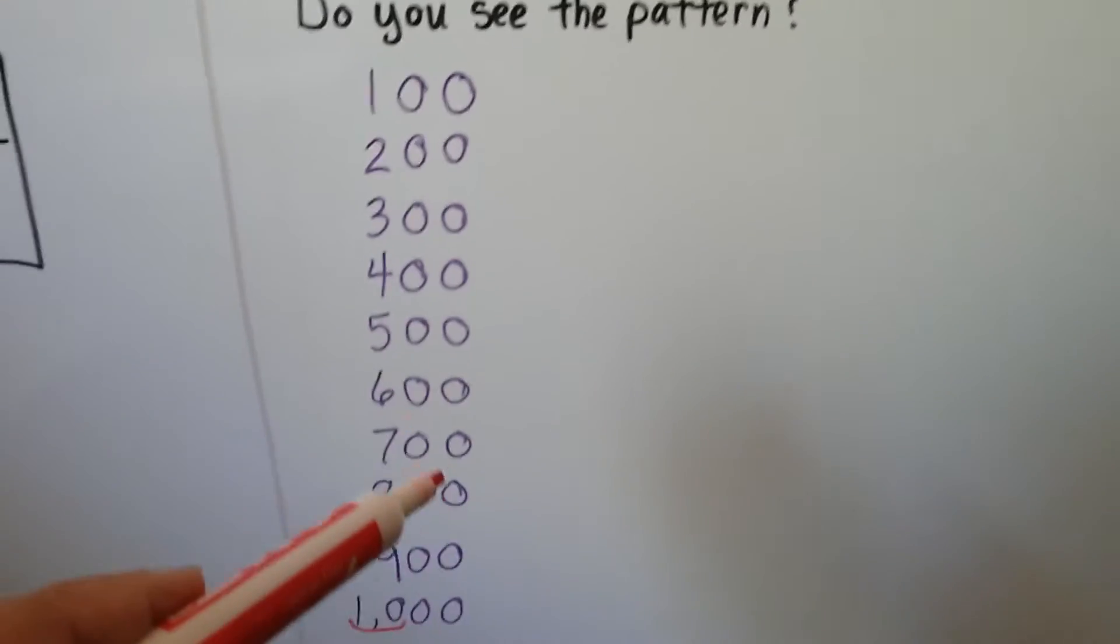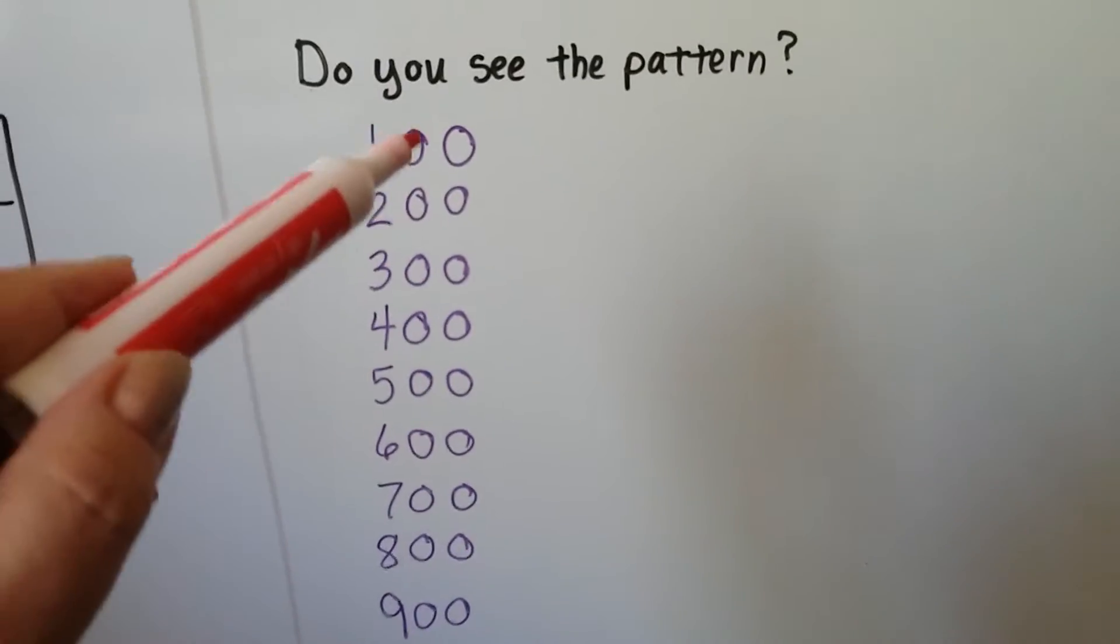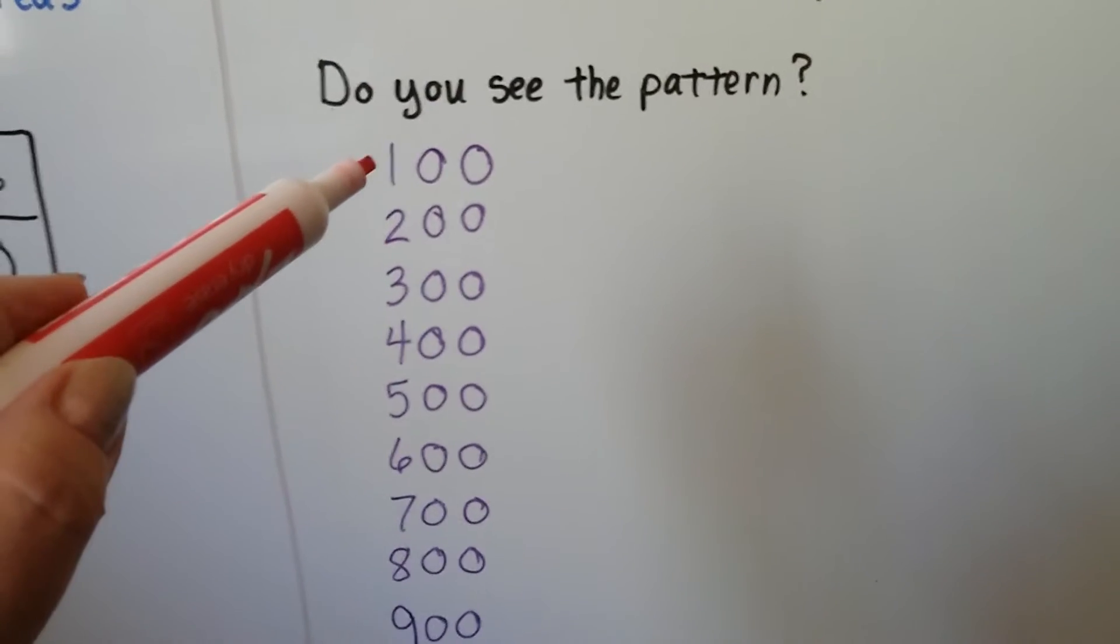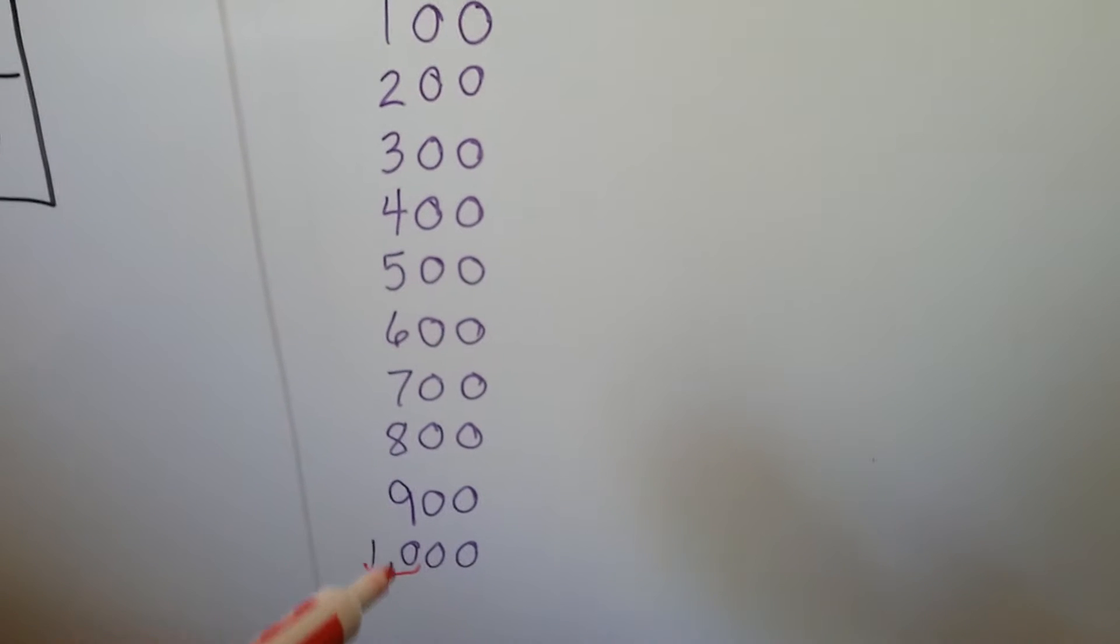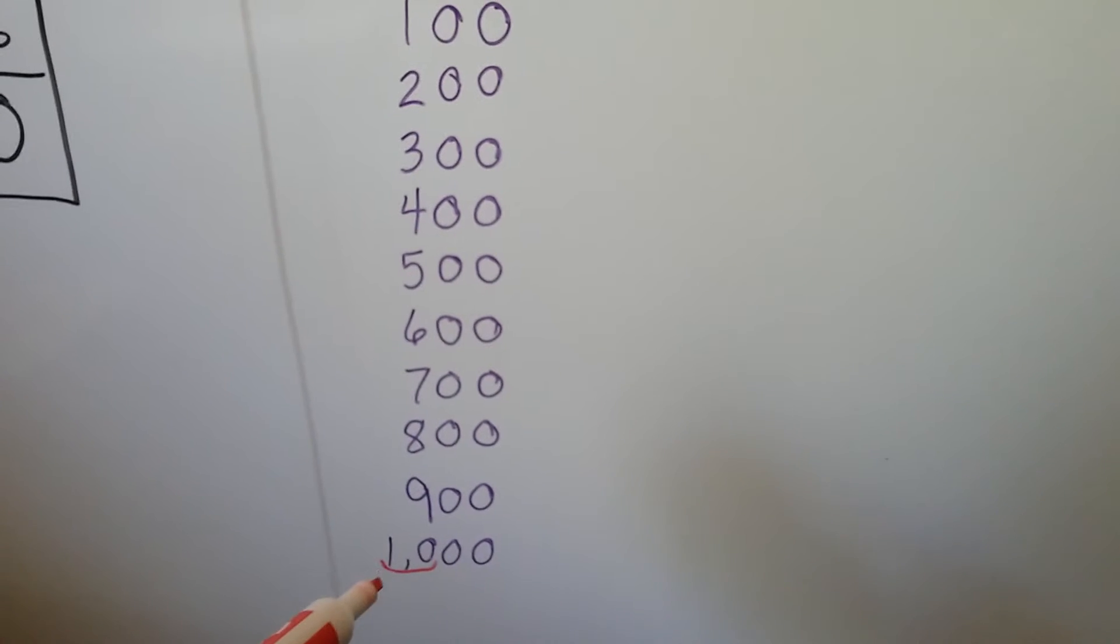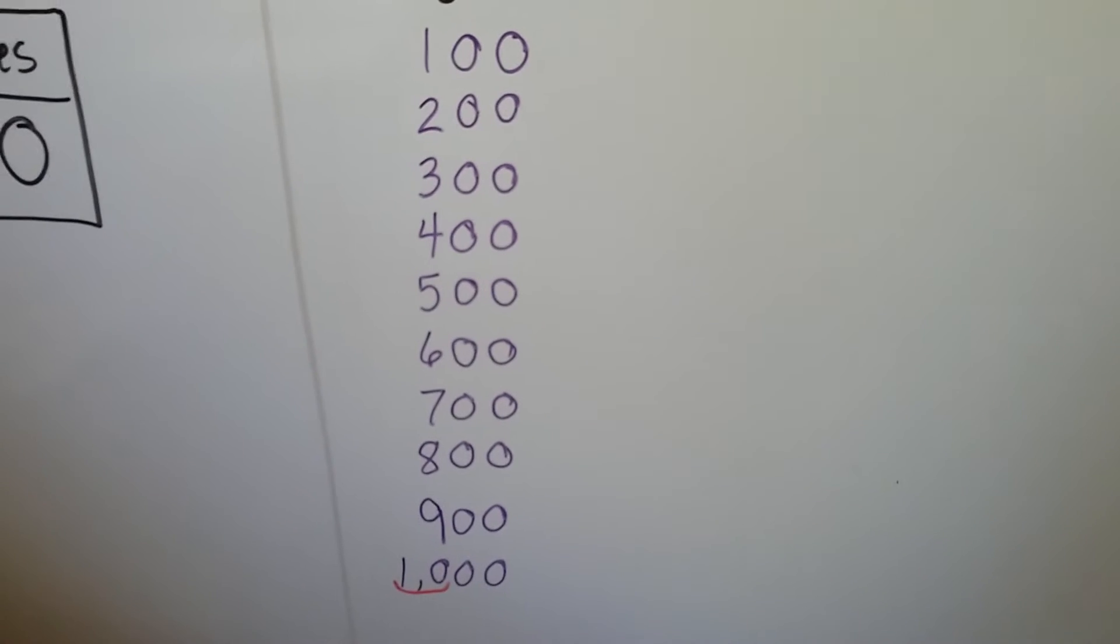There's a zero in all of the ones place, there's a zero in all of the tens place, and it just counts. 1, 2, 3, 4, 5, 6, 7, 8, 9. And then when we get to ten, we would go to the next place value, thousands. See that?